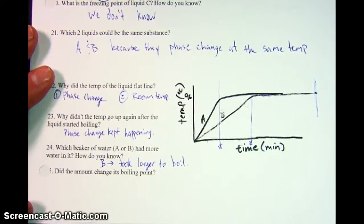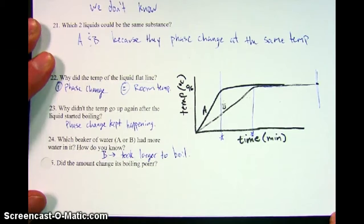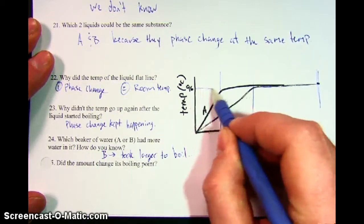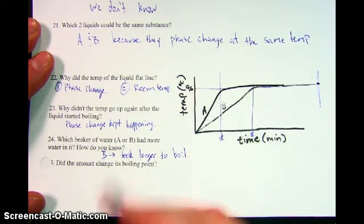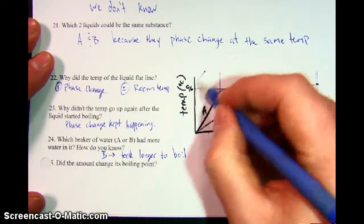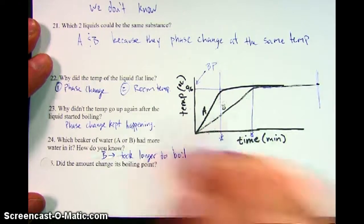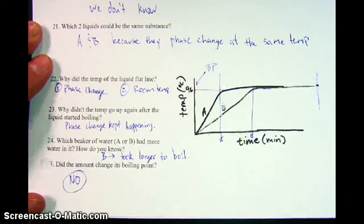Last one on the paper, number 25, did the amount change its boiling point? This was the whole point of the lab that we did in class when everybody got different amounts. Since both of those lines flatten out at the same temperature, that's the boiling point. It took them at different times to get there, but the amount did not change the boiling point.